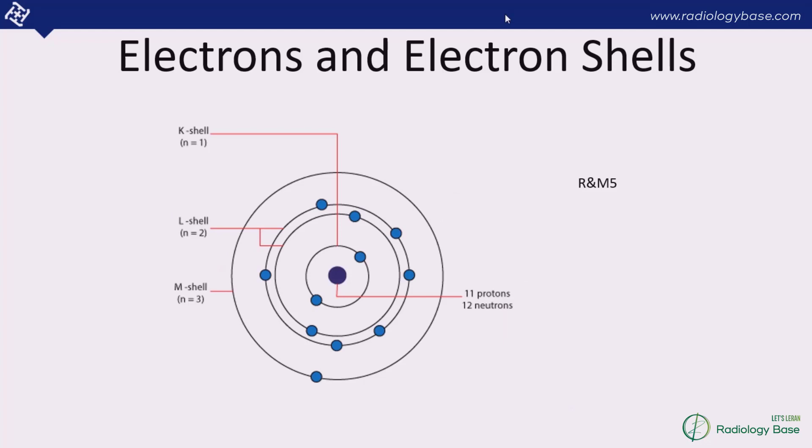The M shell is going to contain 18 electrons. The second most important thing is that all the shells except the K shell contain more than one subshell. You can see there are two subshells of L which contain a different number of electrons.